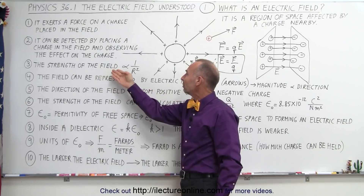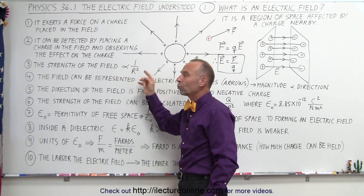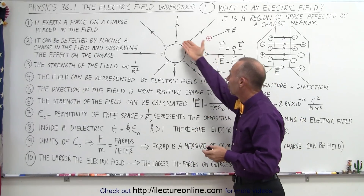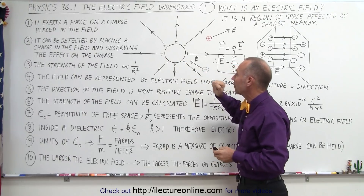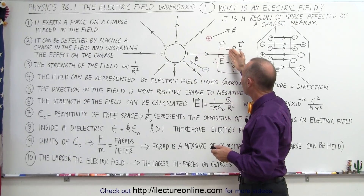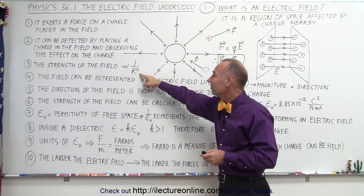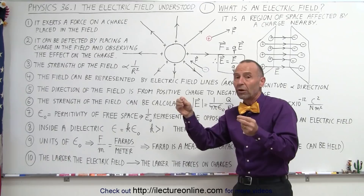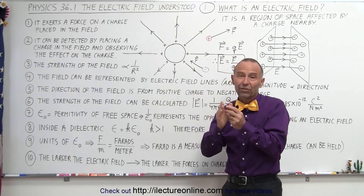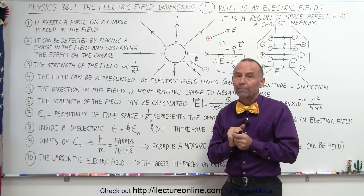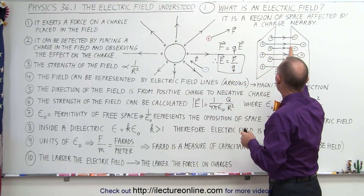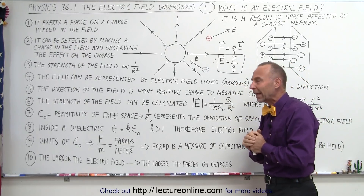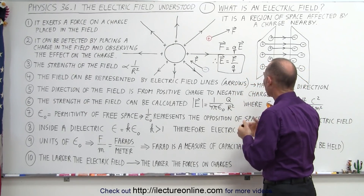The strength of the field is proportional to 1 over the distance squared from the source of the field. The source of the field are typically charges — positive charges are the source of the electric field. The farther away you go from the source, the weaker the field gets, not just linearly but as 1 over r squared, meaning if you're twice as far away from the source, the field strength is only one-fourth as strong. There are some exceptions, such as when you have a field between two plates that are very close together, which we'll cover later when we discuss capacitance.